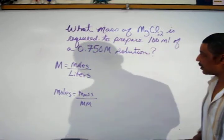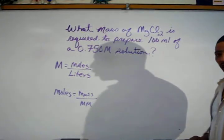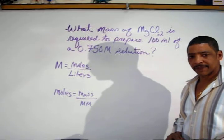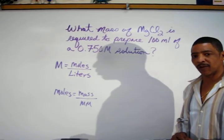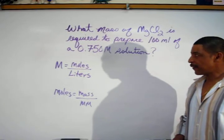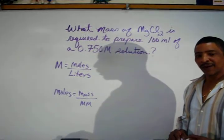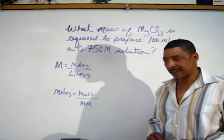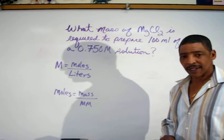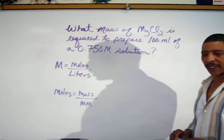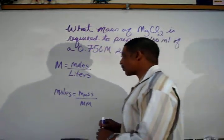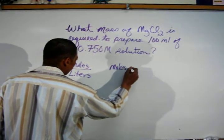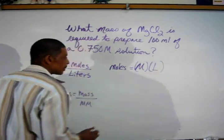What if you are asked to determine what mass of magnesium chloride is required to prepare 100 mL of a 0.750 molar solution? In this case, the practice problem is asking for final mass. As a general rule, if the problem is asking for the mass, then the formula to use last will be the mole calculation. Since the mole calculation is being used last, clearly the molarity formula should be used first. However, in this particular case, the molarity formula must be rearranged to solve for moles. To solve for moles, simply multiply through by the liters, where moles will equal the molarity times the volume in liters.